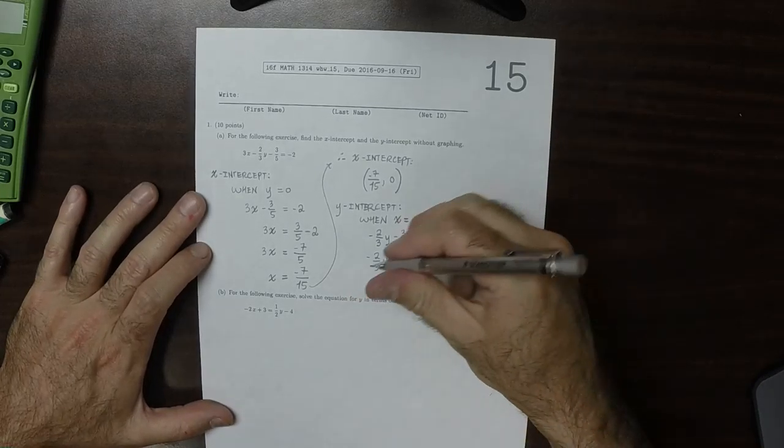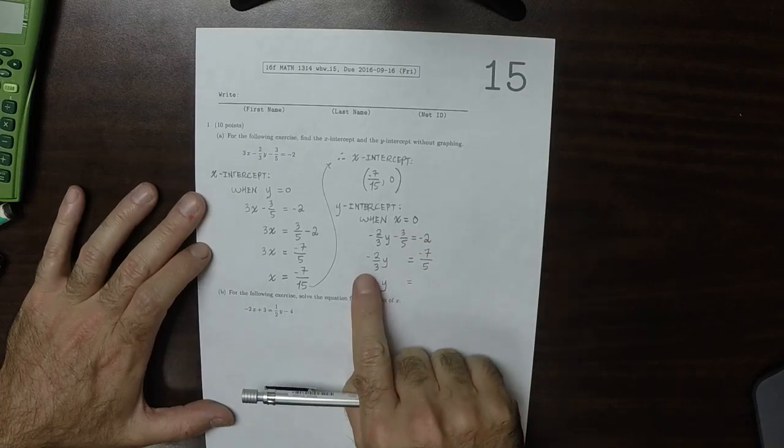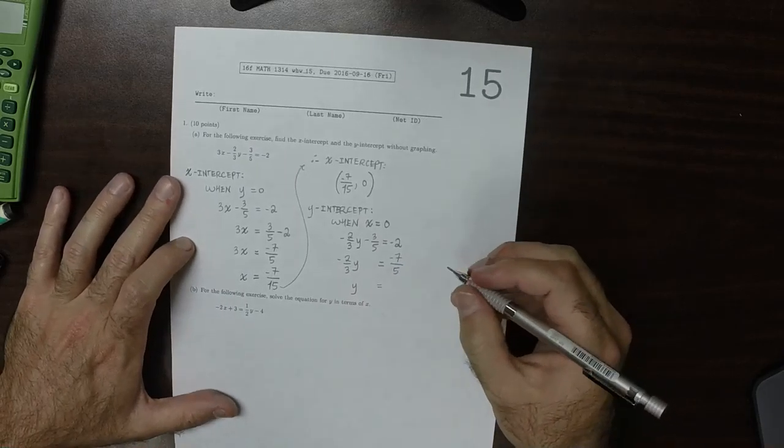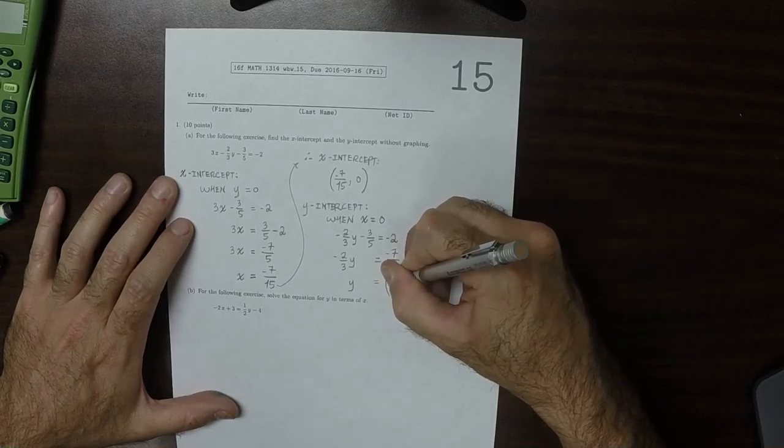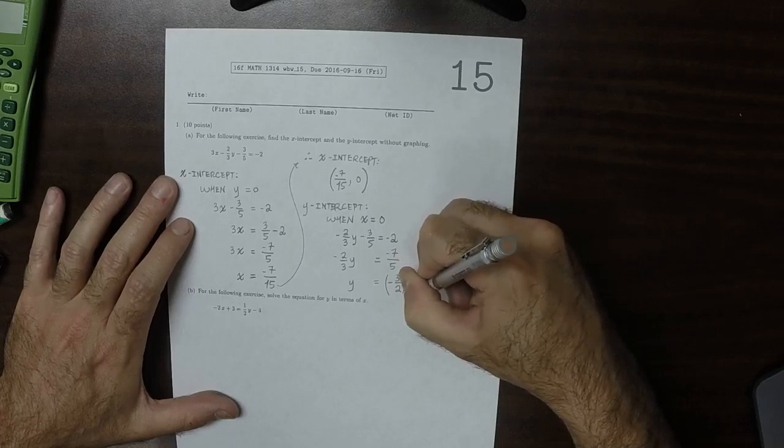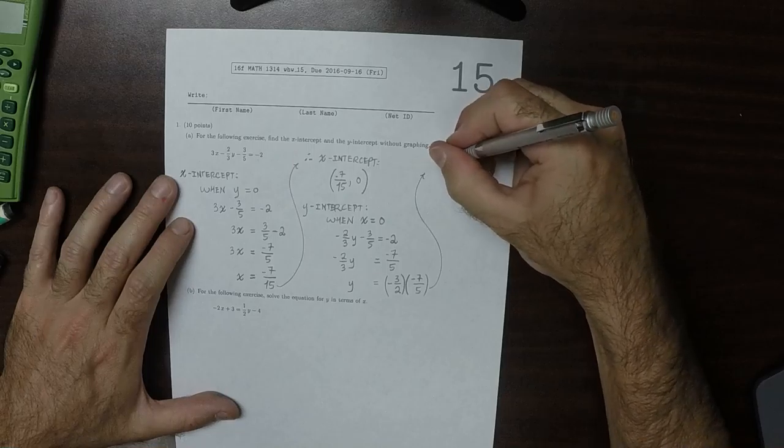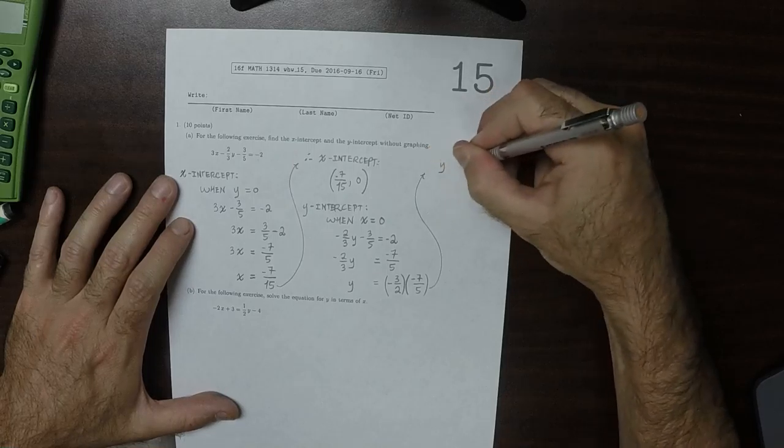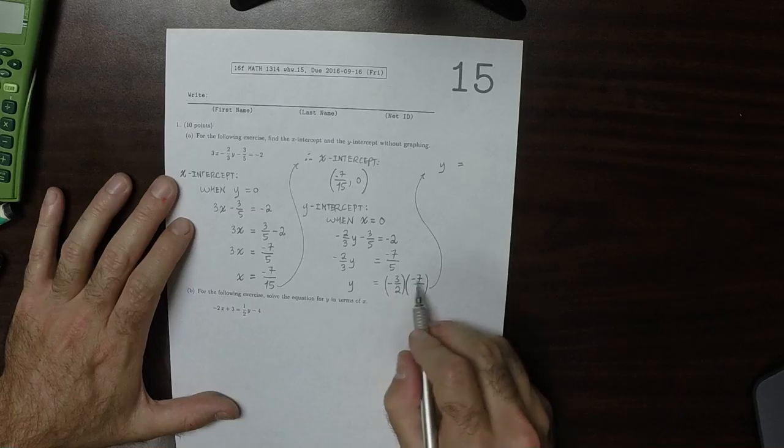So now we want to solve for y. Well, dividing by this fraction is the same as multiplying by its reciprocal. So that would be negative 3/2 multiplied by negative 7/5. So the negatives cancel, and that's 21 over 10.